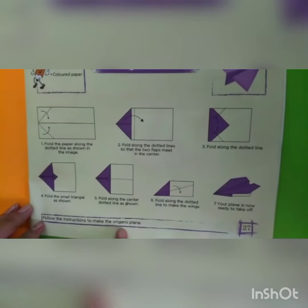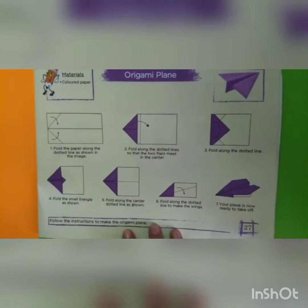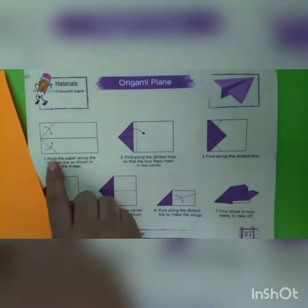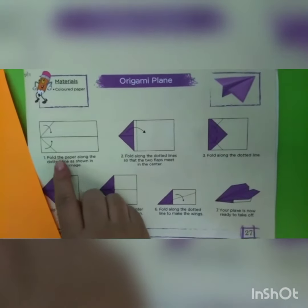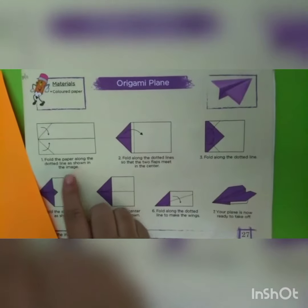For this we need a colored paper. Students, in step 1, fold the paper along the dotted line as shown in the image, like this.